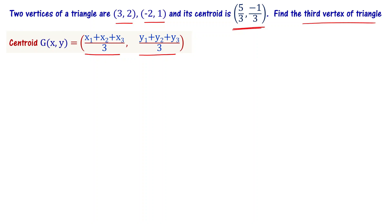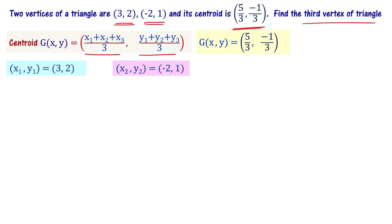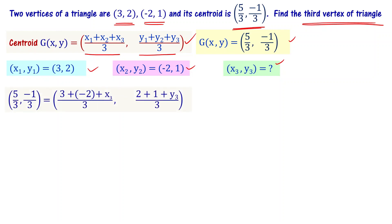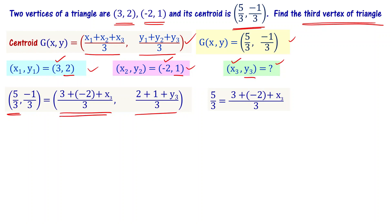The centroid is x comma y equal to 5 by 3 comma minus 1 by 3. The two known vertices give x1 comma y1 as 3 comma 2 and x2 comma y2 as minus 2 comma 1. The third vertex x3 comma y3 is unknown. Substituting all values: 5 by 3 comma minus 1 by 3 equals 3 plus minus 2 plus x3 divided by 3, comma 2 plus 1 plus y3 divided by 3. For the x-coordinate: 5 by 3 equals 1 plus x3 divided by 3.